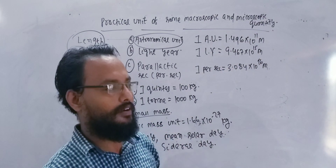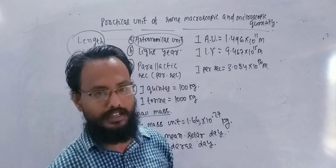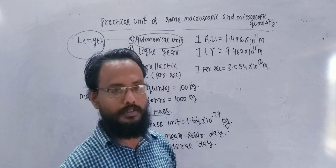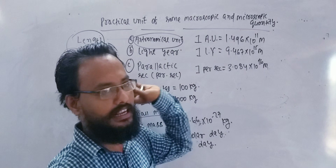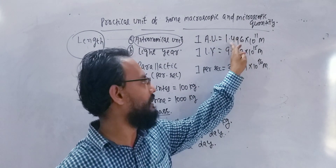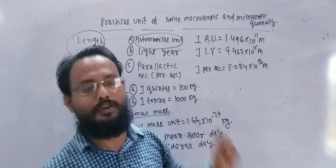We are going to have a very astronomical unit, which is the definition of the mean distance. It is not very important, so we are going to have a very astronomical unit, which is equal to the mean time.